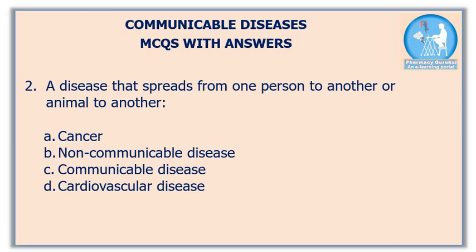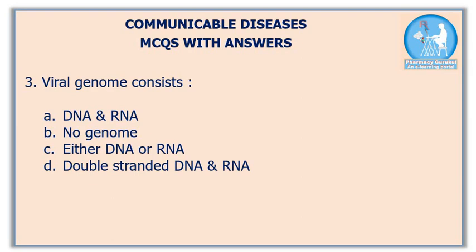The correct answer is option C: communicable disease. For example, COVID-19. Third question: viral genome consists of — DNA and RNA, no genome, either DNA or RNA, or double-stranded DNA and RNA?